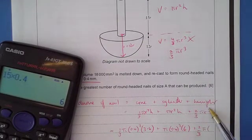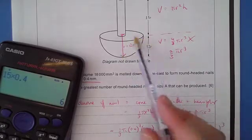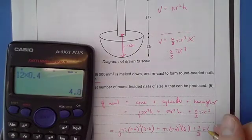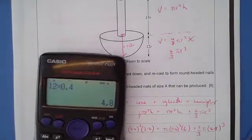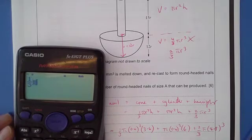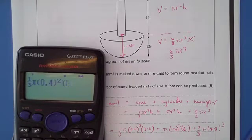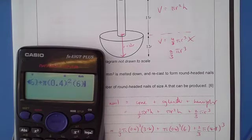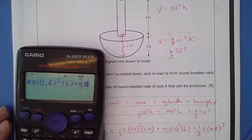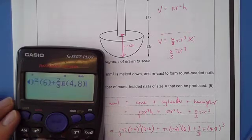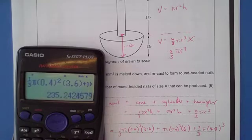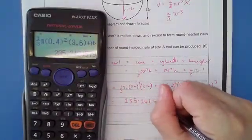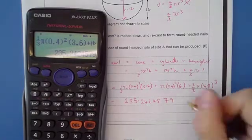Finally in here, the radius of this hemisphere is 12 lots of what the radius of this cylinder and the cone is, so it's going to be 12 times by 0.4, which is 4.8. All of that now is going into our calculator, and that comes to 235.2424579.